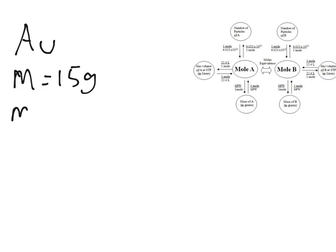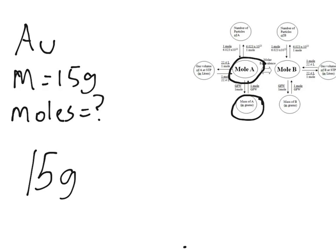And the problem is just asking you how many moles are there in that elemental gold. So moles is the question. If you look at your diagram, we have mass of A here and we want mole of A. So it is a basic conversion. You do not have to go through another unit for you to get to the mole. You are going to write first the given unit, so 15 grams of AU.